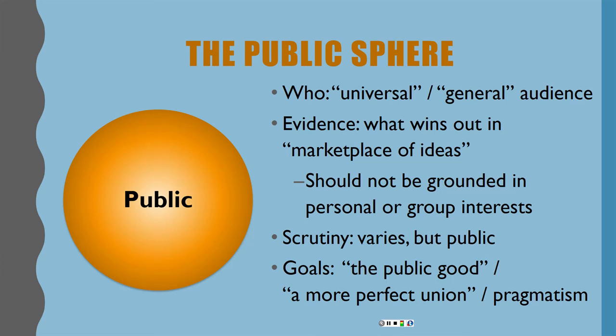The goal of good public sphere communication or deliberation is to try and figure out what is for the public good — what makes a country or a group a more perfect union. How can we have differences and create policies that maybe if we can't get everyone to agree, we can at least get most people to agree and feel pretty good about them most of the time? Essentially the goal in the public sphere is pragmatic thinking — being informed decision makers, learning from each other, not rushing to the stasis of policy and saying my way or the highway.